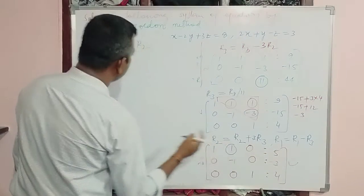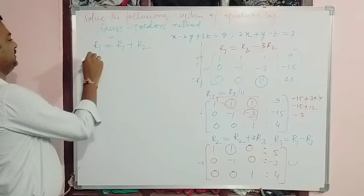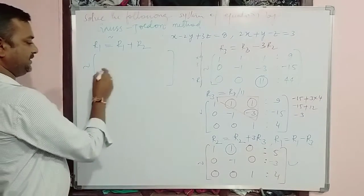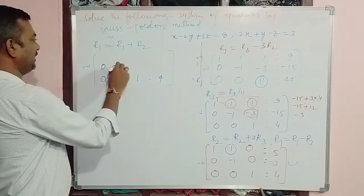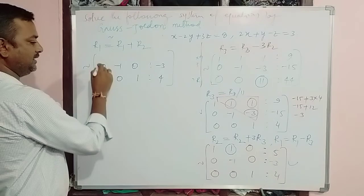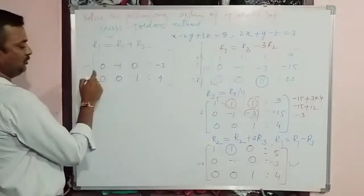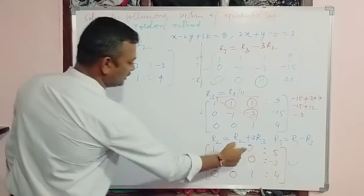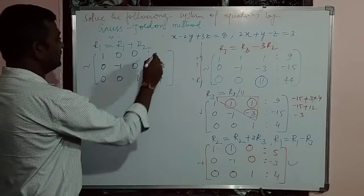After R1 = R1 + R2: Row 1 becomes 1, 0, 0 | 5 + (-3) = 2. So the final matrix is: Row 1: 1, 0, 0 | 2; Row 2: 0, -1, 0 | -3; Row 3: 0, 0, 1 | 4. We have now made both above and below the principal diagonal elements of the coefficient matrix equal to zero.